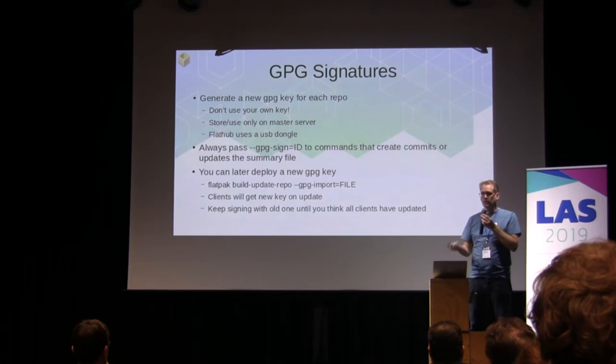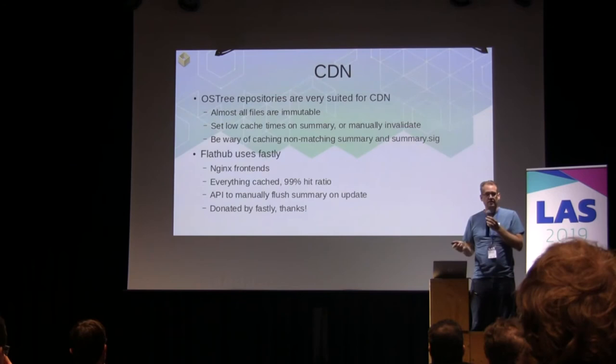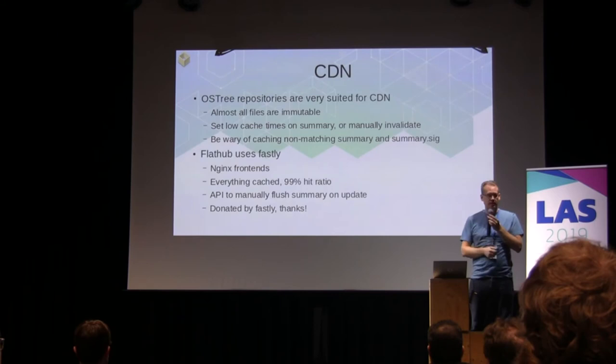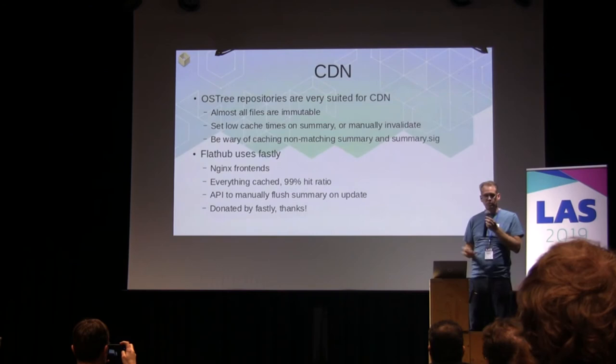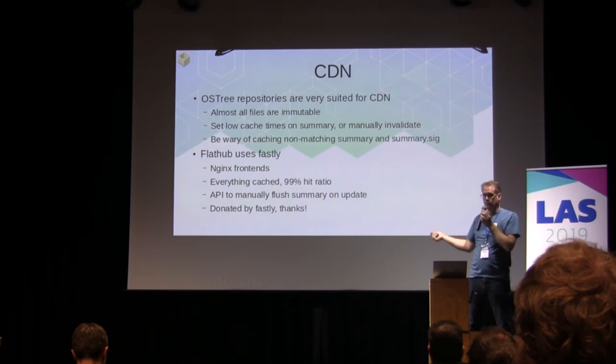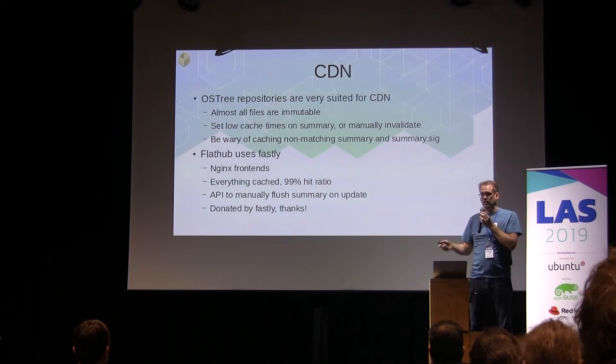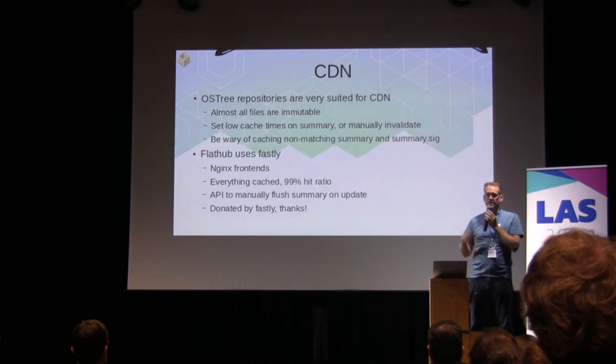To really do well worldwide you want to use a CDN. The way the OSTree repo works matches very well how a CDN works because all the files are static — you can cache them forever. The only thing to be careful with is the summary file. The setup on FlatHub is that we have Nginx proxies that proxy the main repository, and then everything is cached in Fastly from that. Whenever we update the summary file, we use Fastly's REST API to trigger purging of certain things from the cache — so we cache the summary files but purge automatically whenever needed.